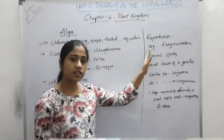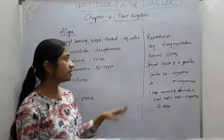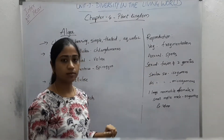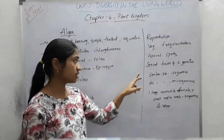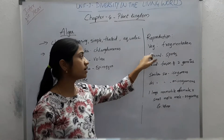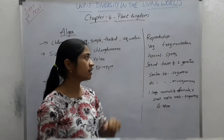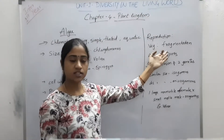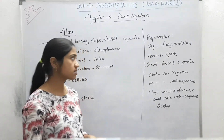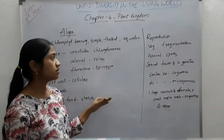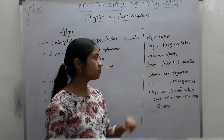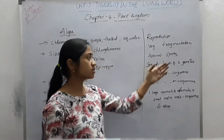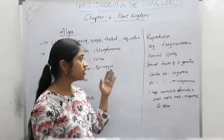Coming to the reproduction of algae, it takes place through vegetative, asexual and sexual types. Vegetative reproduction takes place through fragmentation. The fragments give rise to a thallus, and the thallus grows into new algae. Asexual reproduction takes place through spores; when these spores disperse, they give rise to new plants.